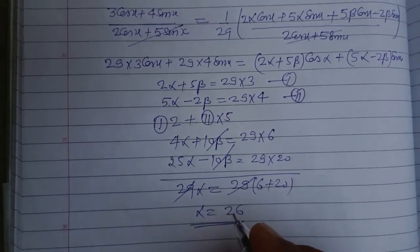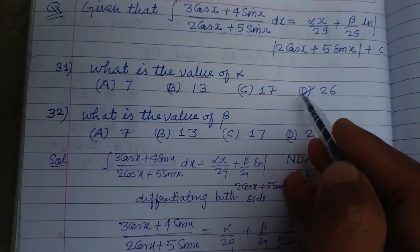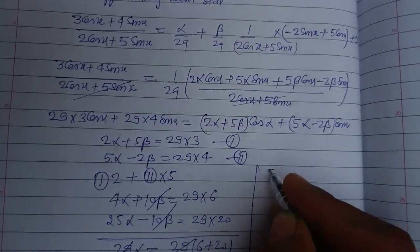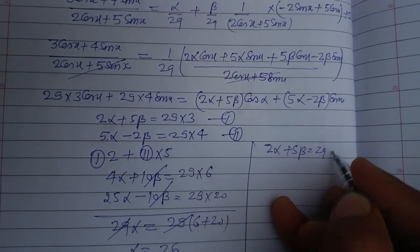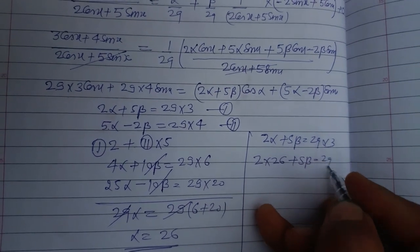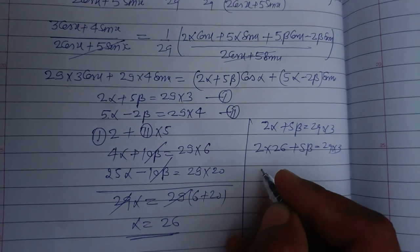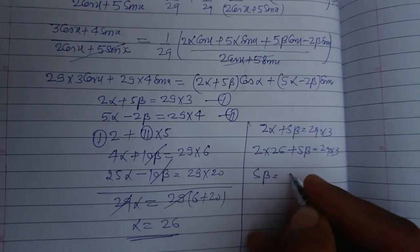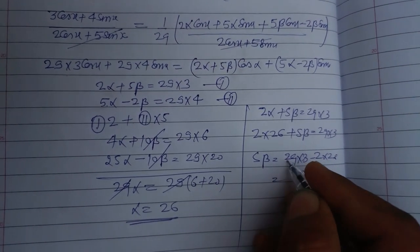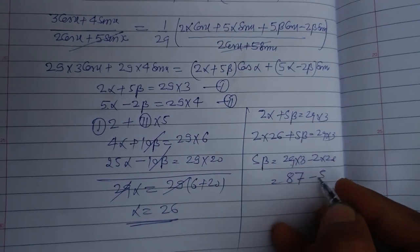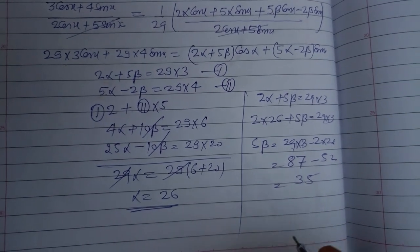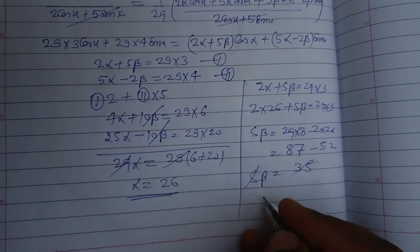Solving: 29 alpha = 29 times 26, so the 29s cancel and alpha = 26. This is the correct answer; option D is correct. Now finding beta: using 2 alpha + 5 beta = 29 times 3, substituting alpha = 26 gives 2 times 26 + 5 beta = 87, so 52 + 5 beta = 87, giving 5 beta = 35, and therefore beta = 7.